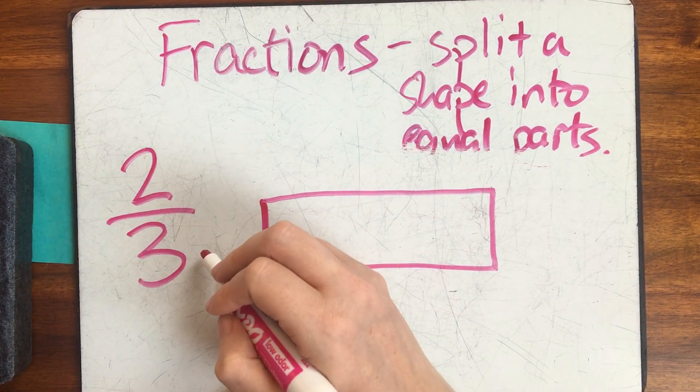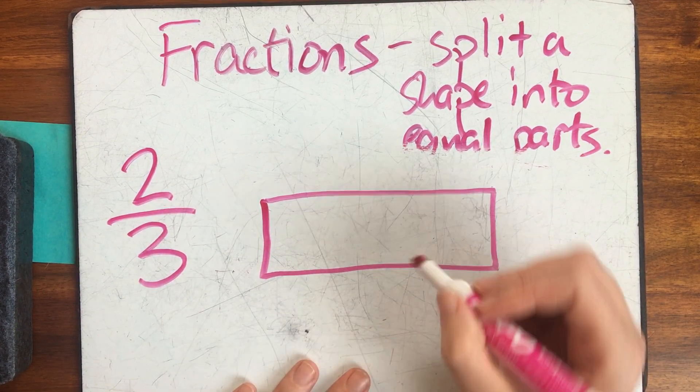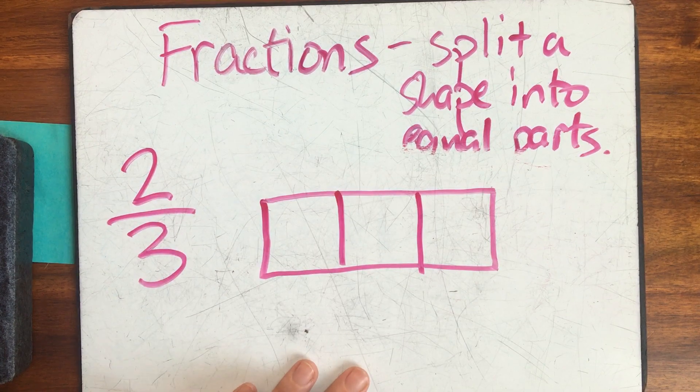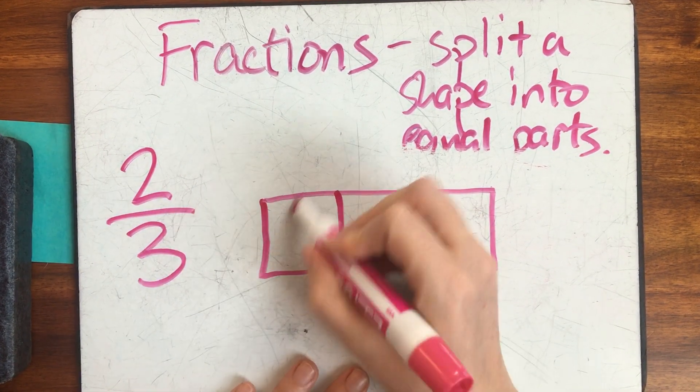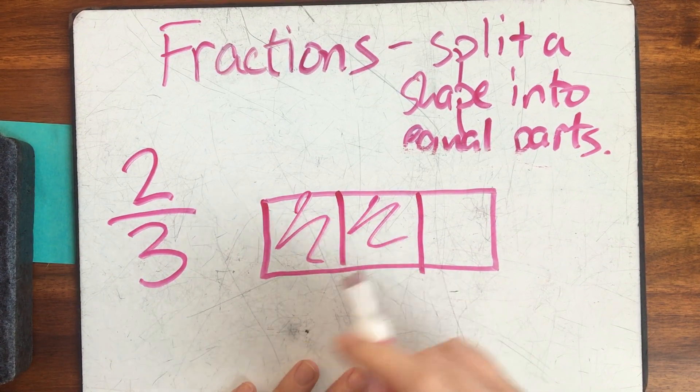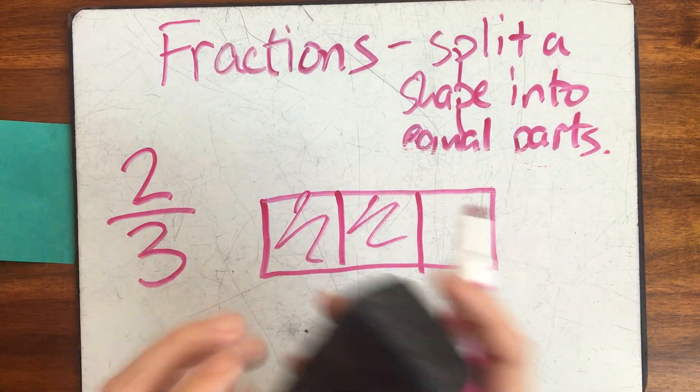So I need to split my whole rectangle into three parts. One, two, three. And how many parts do I need? Two. One, two. My fraction is two out of three. Or two-thirds.